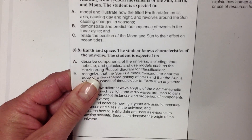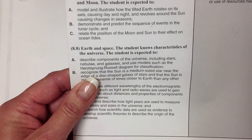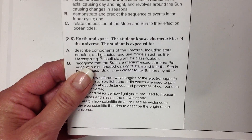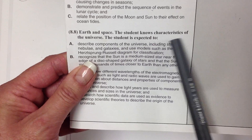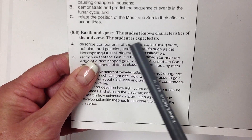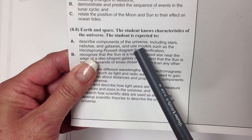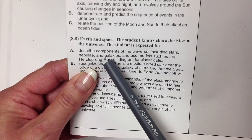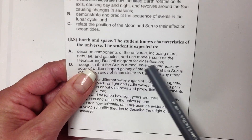We're going to start today with looking at 8.8a, which reads that Earth and space: the student knows characteristics of the universe. The student is expected to describe components of the universe, including stars, nebula, and galaxies, and use models such as the HR diagram for classification. That's what we're going to focus on — 8.8a.